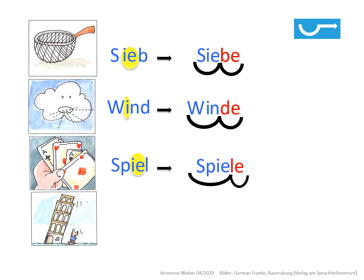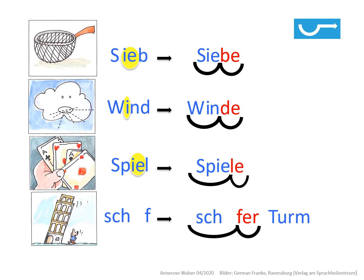Schau mal – das ist ein Turm, der ist ziemlich schief. Ich verlängere und sage: schiefer Turm. Jetzt habe ich aus dem Schief ein zweisilbiges Wort gemacht: Schiefer. In der ersten Silbe ist nach der Lücke für das I oder das IE die erste Silbe fertig. Das heißt, ich brauche wieder ein IE. Und genau wie in dem Wort Schiefer, schreibt man auch das einsilbige Wort Schief mit einem IE.